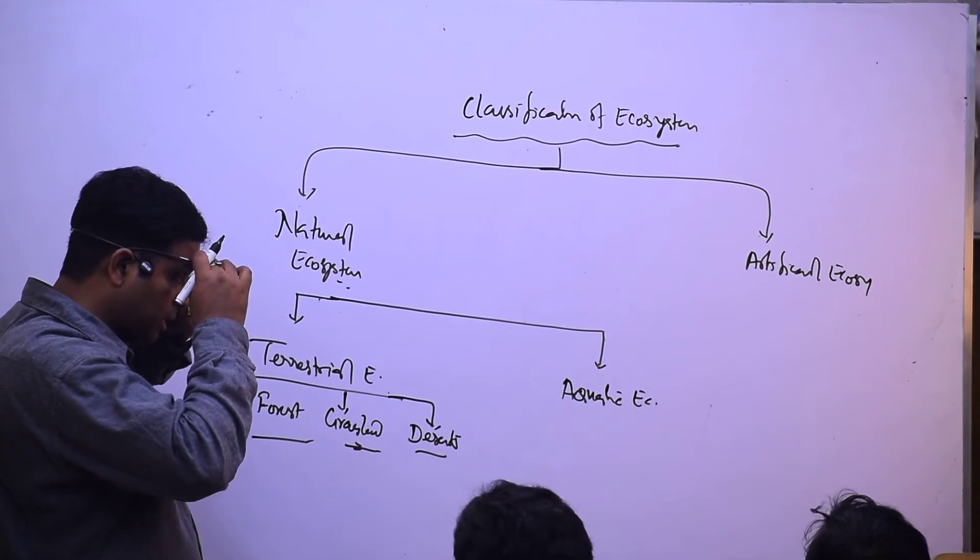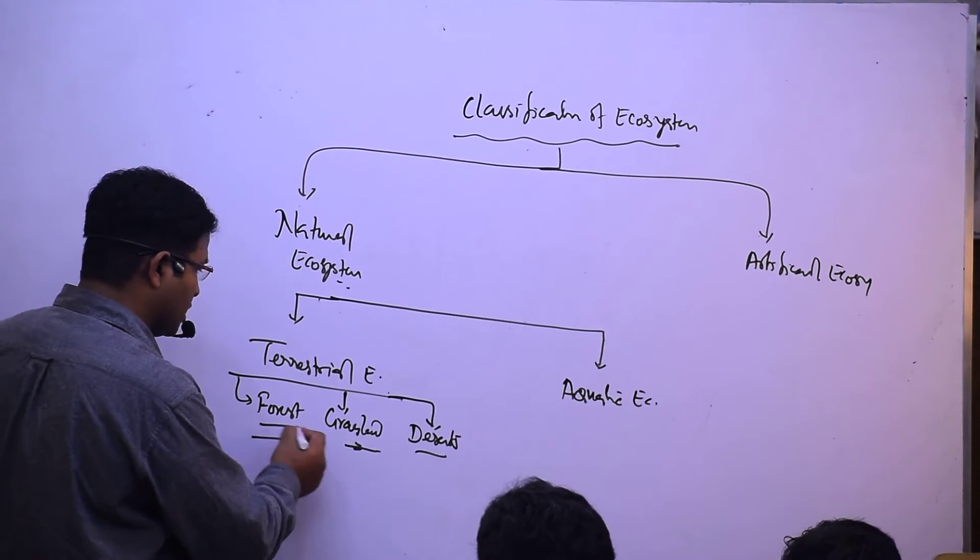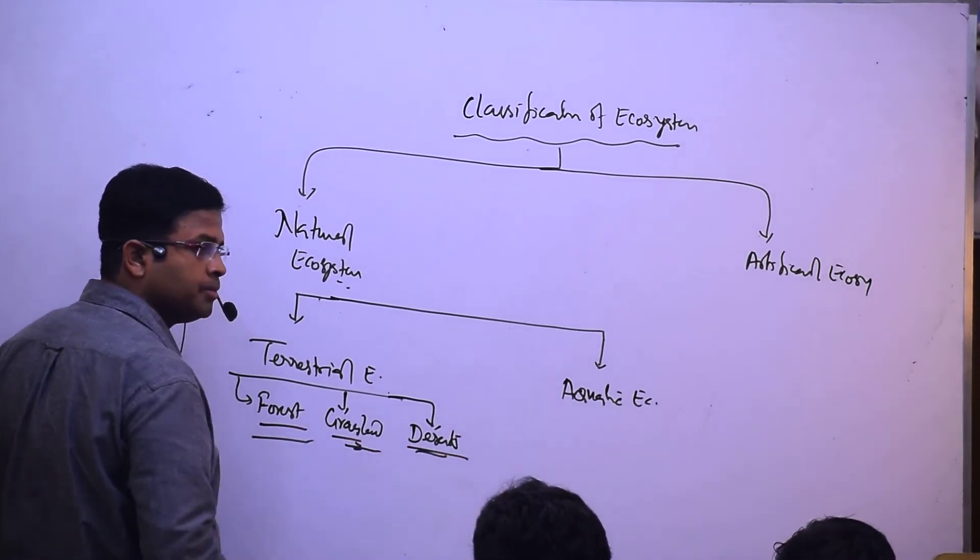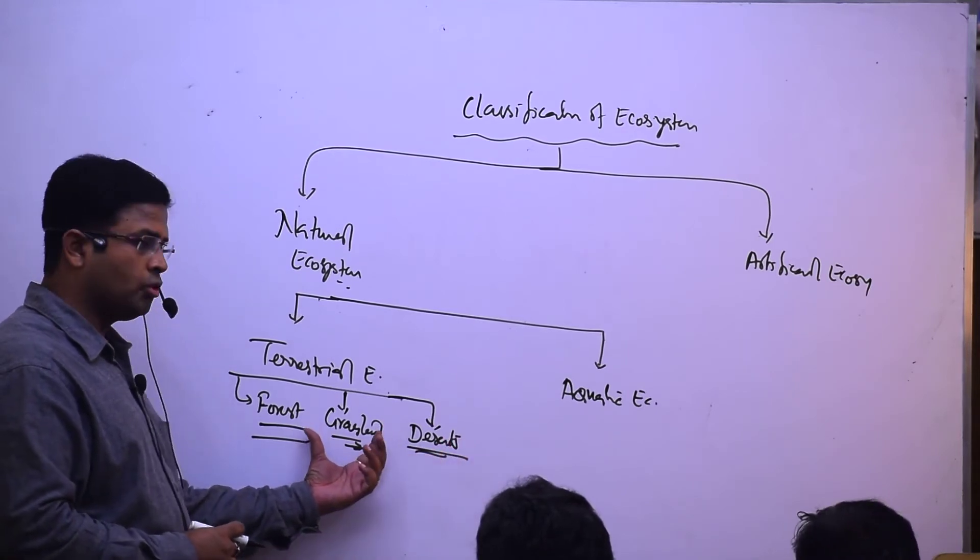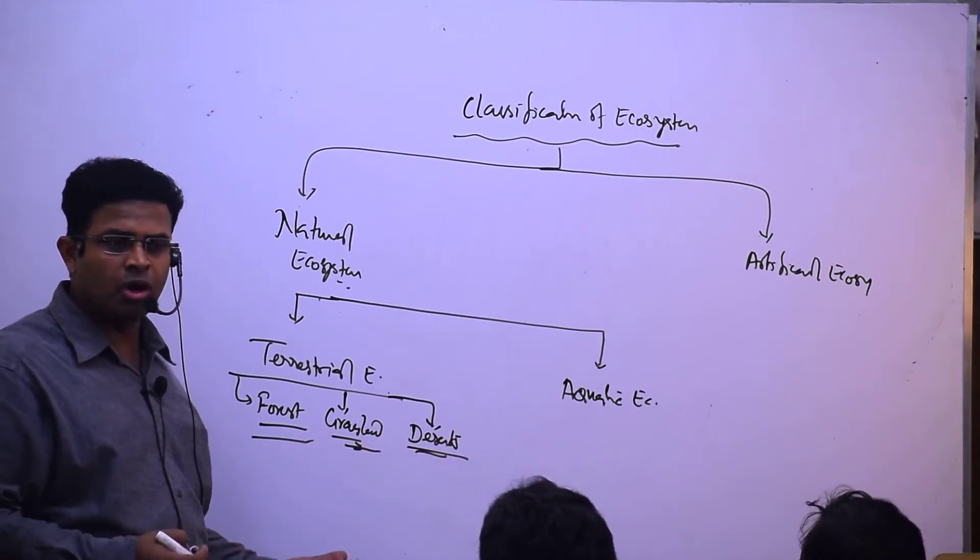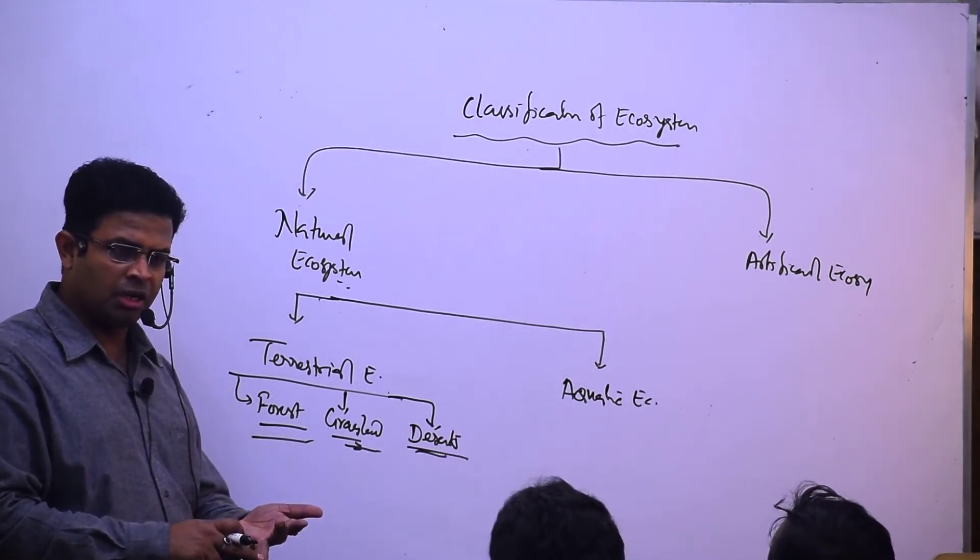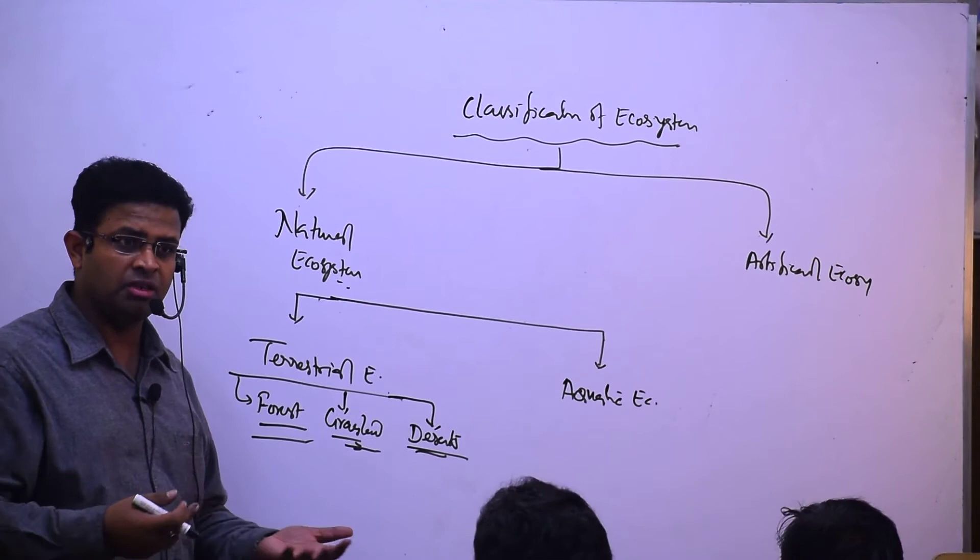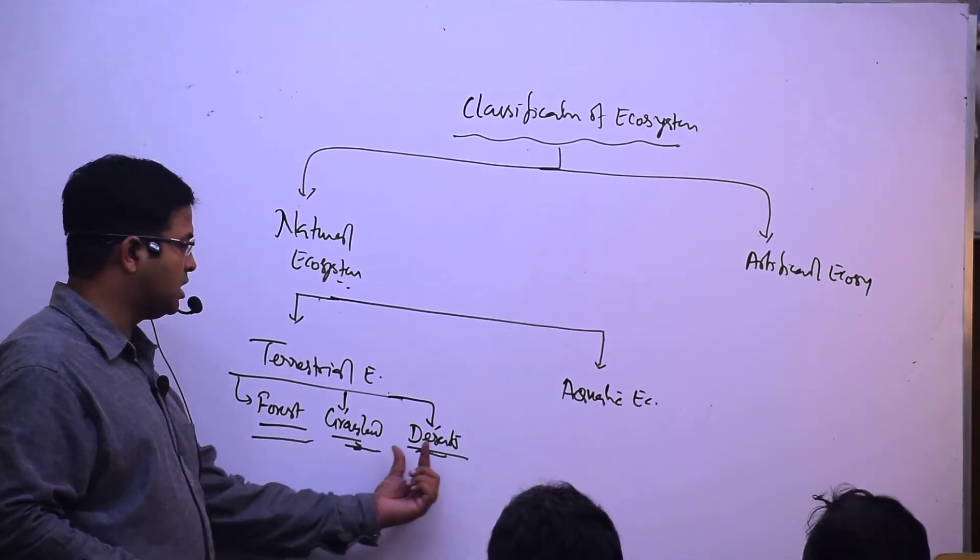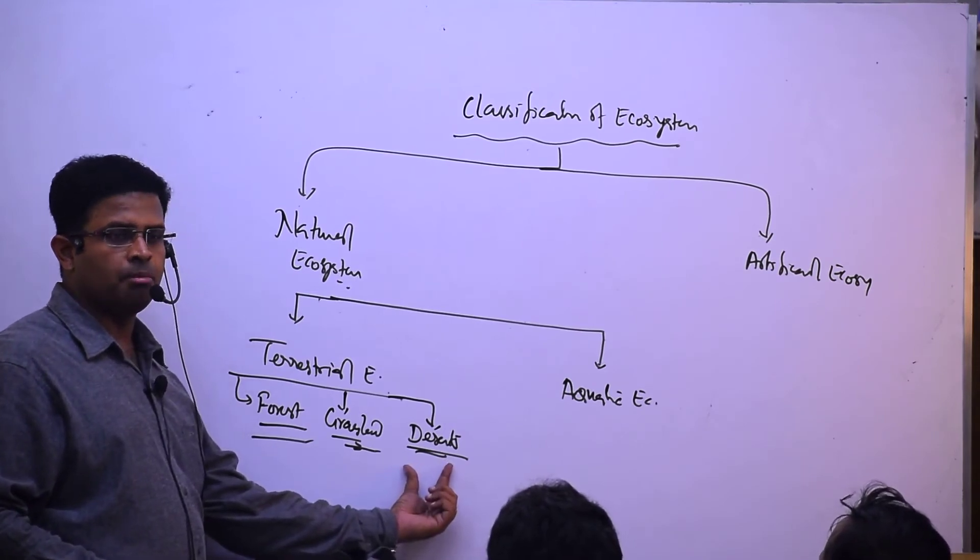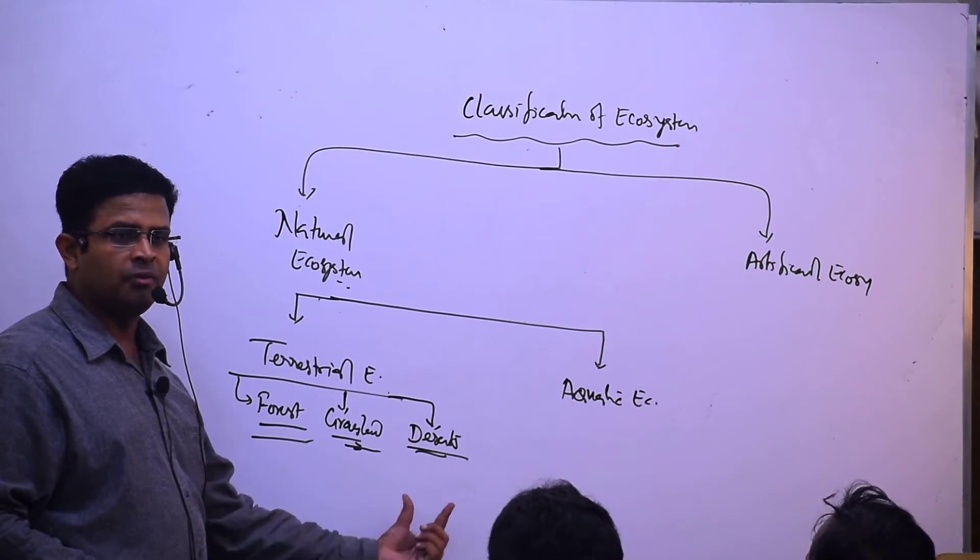So which are the three famous terrestrial ecosystems? Forest, grassland, and deserts. We are reducing these two and increasing desertification. We are reducing grasses for agriculture, and reducing forests for agriculture, industry, and settlement. So these two are decreasing and deserts are increasing.